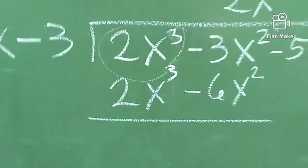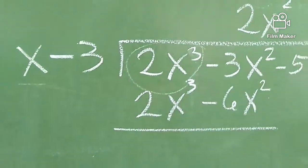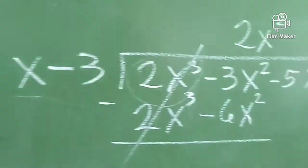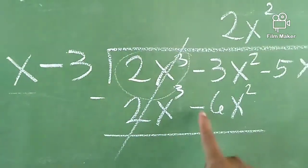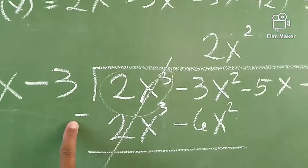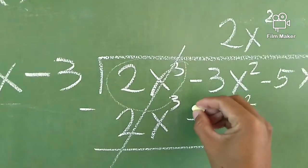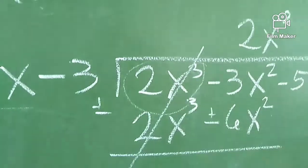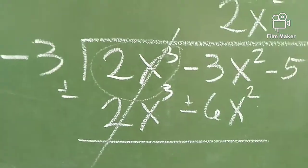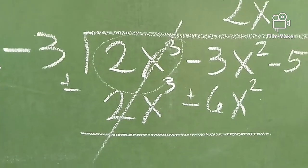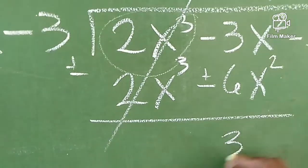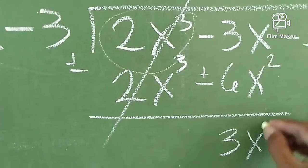And then subtraction po tayo. So this is cancelled out. Ngayon since this is negative and negative, at subtraction po tayo — so change the sign of the subtraction and proceed to addition. Then the answer is 3x squared.